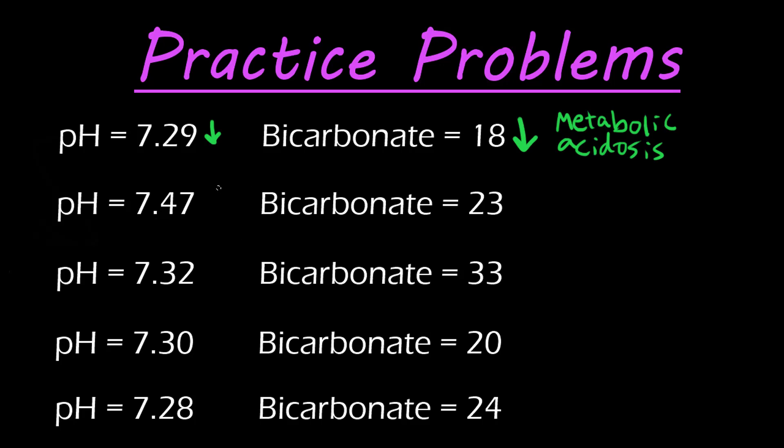Next, here we have pH 7.47. This is above our normal range. Bicarbonate, this is normal. We don't have any abnormal values here. Normal values are 22 to 26. These two arrows or directions are not in the same direction, so it's going to be respiratory. And then alkalosis or acidosis? Well, it's above our normal range, the pH, so it's alkalosis.